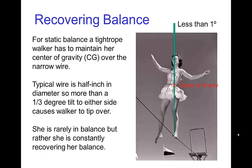A good example to start with is a character on a tightrope. To maintain static balance, the tightrope walker has to keep her center of gravity over the wire. But typically that's rather difficult to do because the wire is quite narrow, so the tightrope walker is constantly shifting poses in order to recover balance.